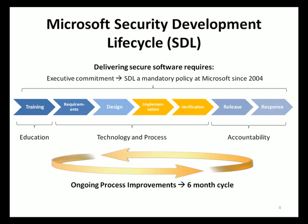In the requirement phase, requirements for security and privacy must accompany functional requirements of the software being created. Such requirements may include the use of encryption, authentication, and other security measures based on the business requirements, exposure, and sensitive data. A security and privacy risk analysis is performed at this stage. In addition, the threshold for security and privacy, or bug bar, is defined during this phase to ensure that bugs with certain severity are addressed and resolved before the software is officially released.